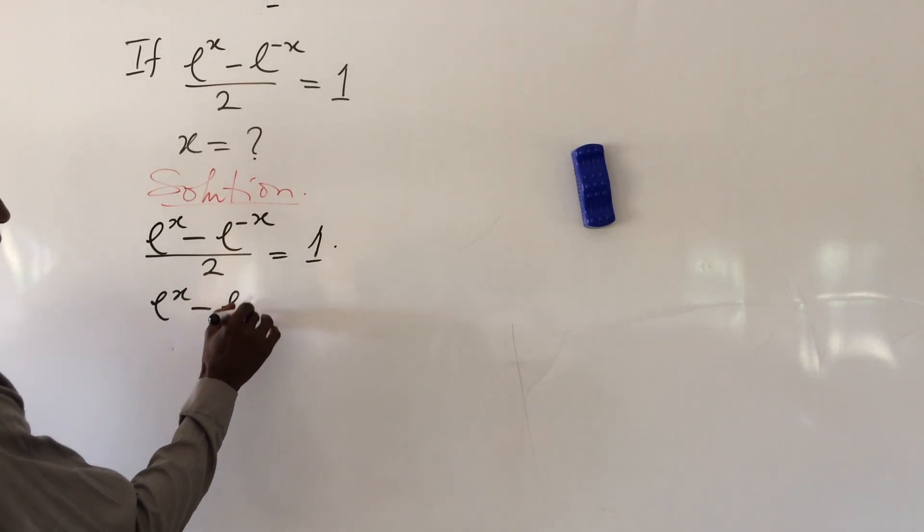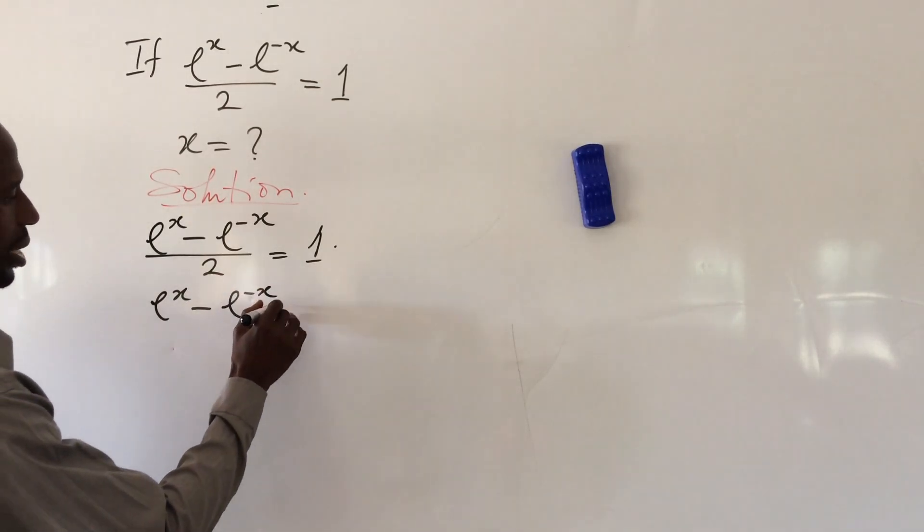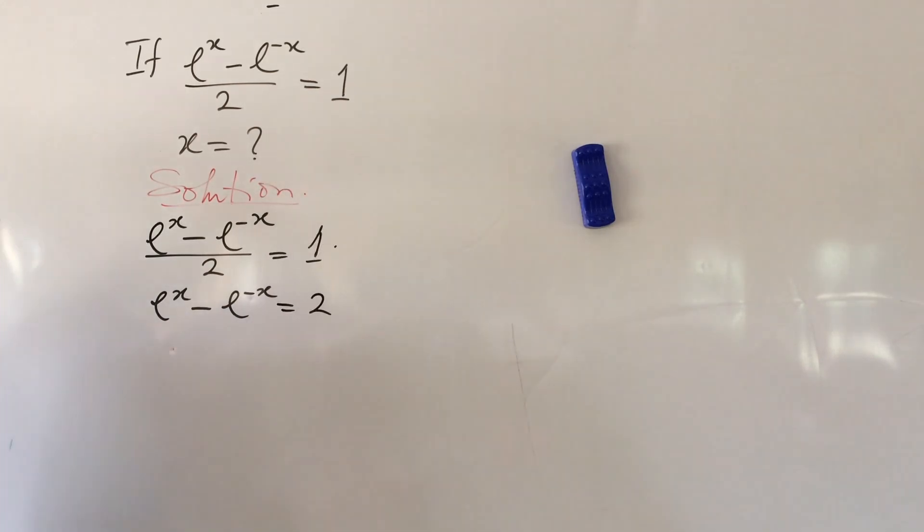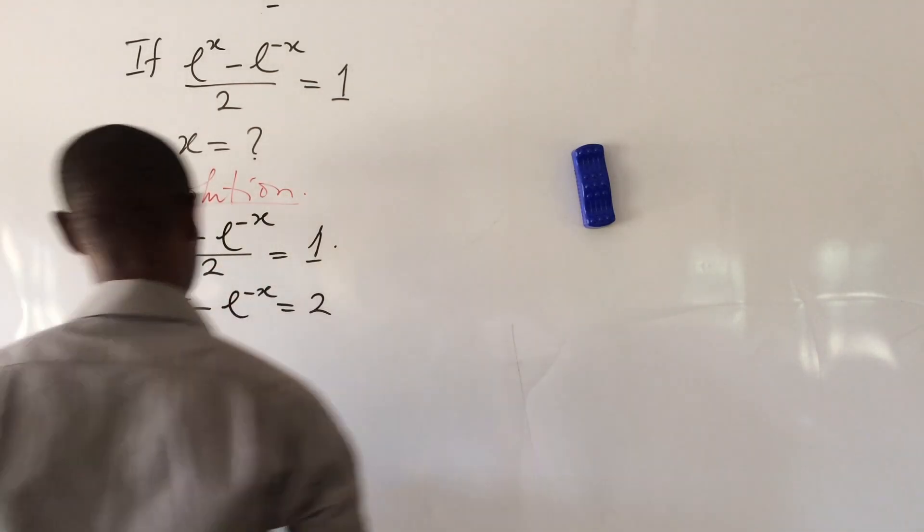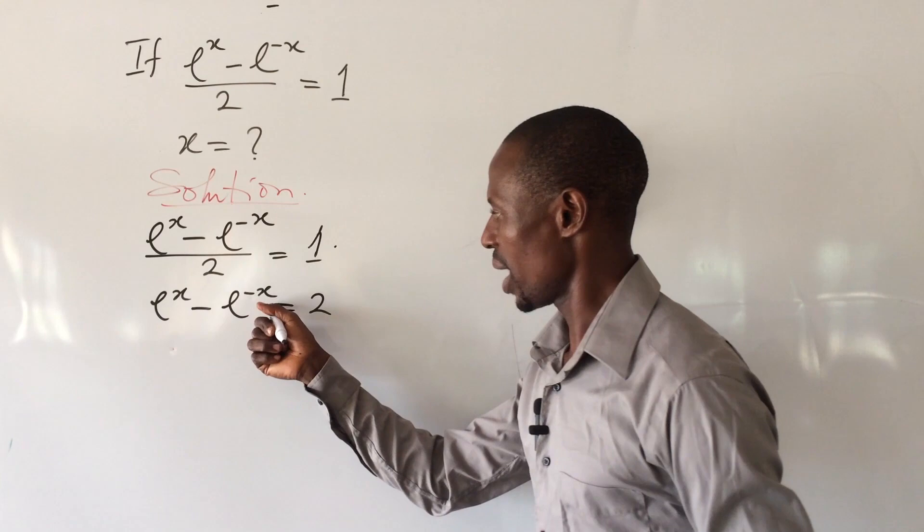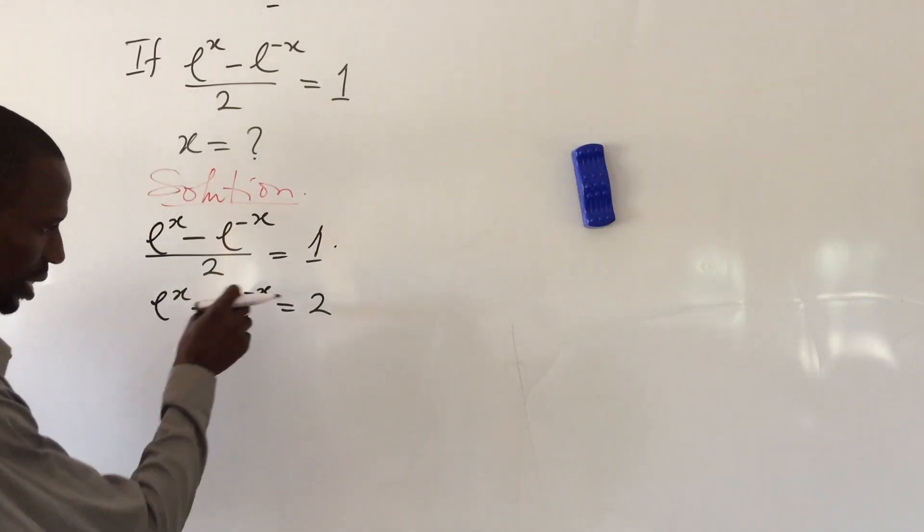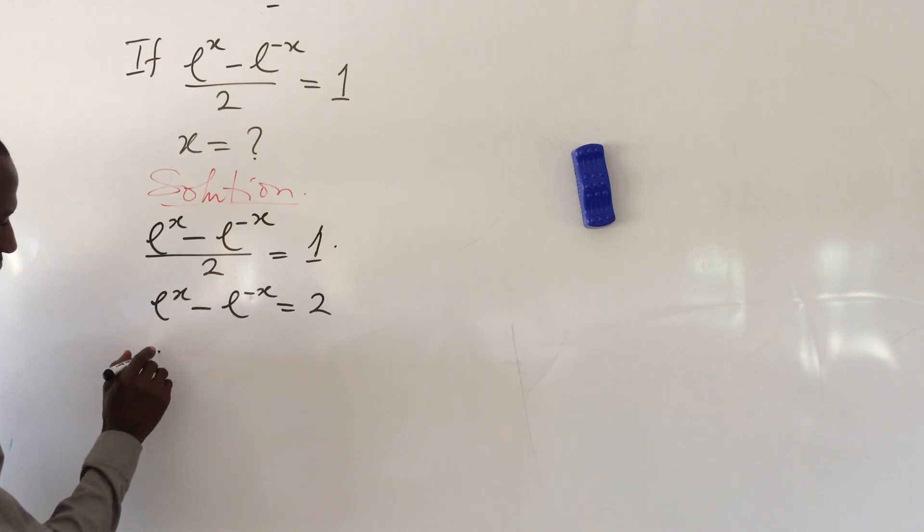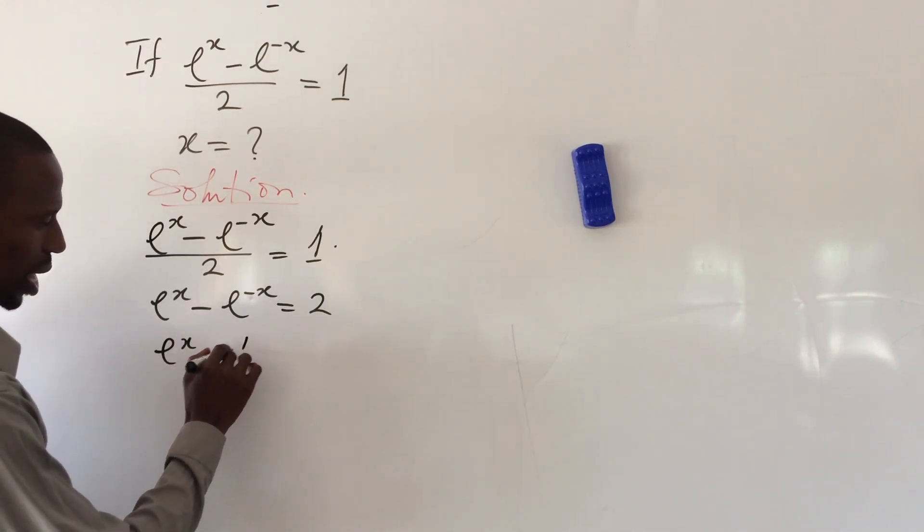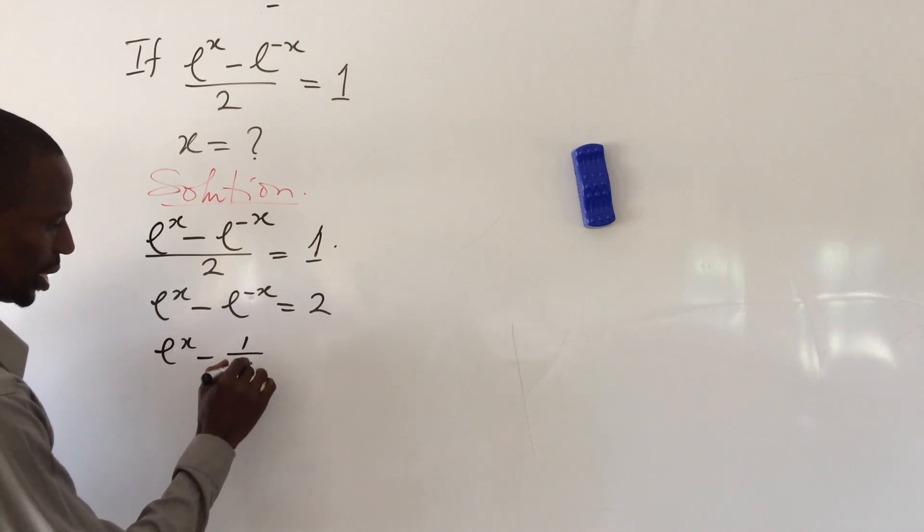If we do that, this gives us e^x - e^(-x) = 2. Because of this negative power, we have to eliminate it. This expression can also be written as e^x - 1/e^x = 2.